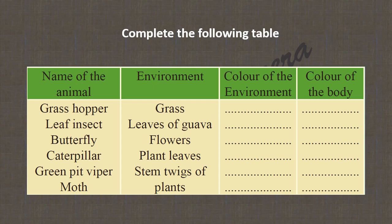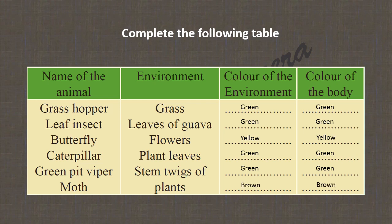Now complete the following table. A list of animals and their environments is given; you have to find the colour of the environment and the colour of the body. Grasshopper — environment green, body green. Leaf insect — environment green, body green. Butterfly — environment yellow, body yellow. Caterpillar — environment green, body green. Green pit viper — environment green, body green. Moth — environment brown, body brown. So the body colour matches with the colour of the environment.